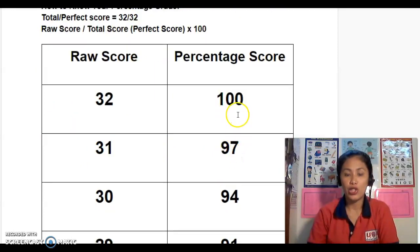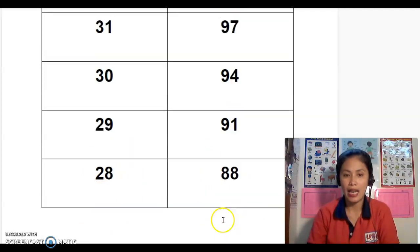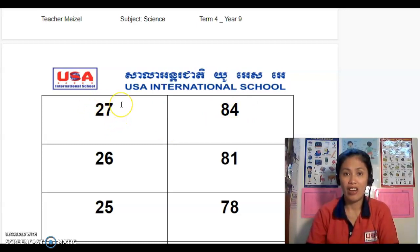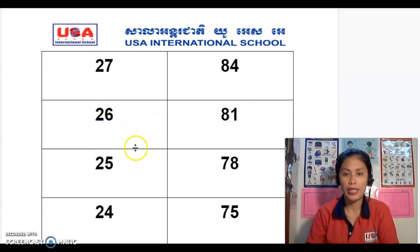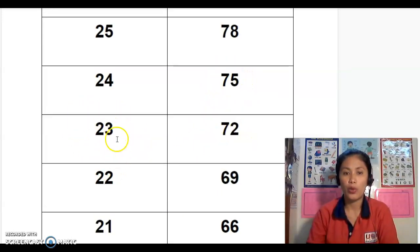If you get 31, your percentage score is 97. If you got 30, your percentage score is 94. 29 gives you 91, 28 gives you 88. If your score is 27, the percentage score will be 84 — that's your raw score of 27 divided by 32, multiplied by 100. 26 gives 81, 25 gives 78, 24 gives 75, 23 gives 72.